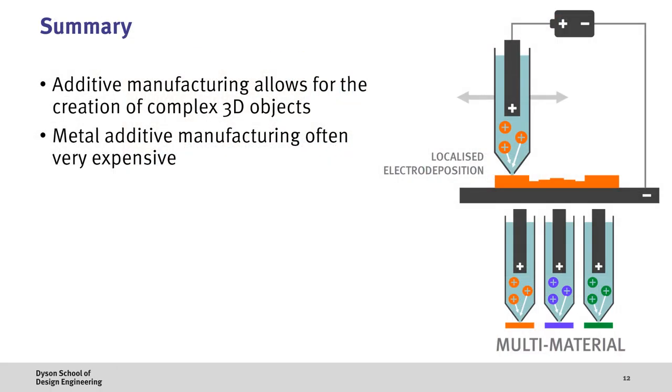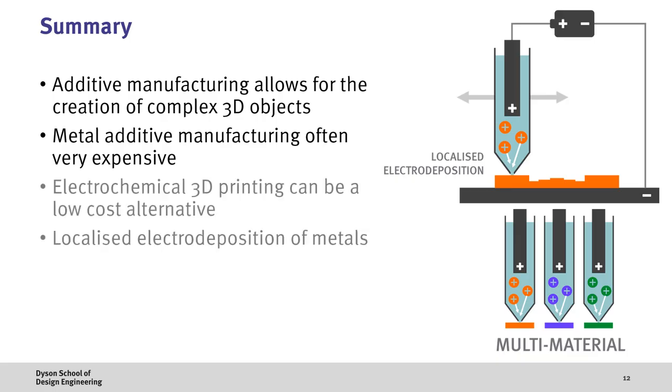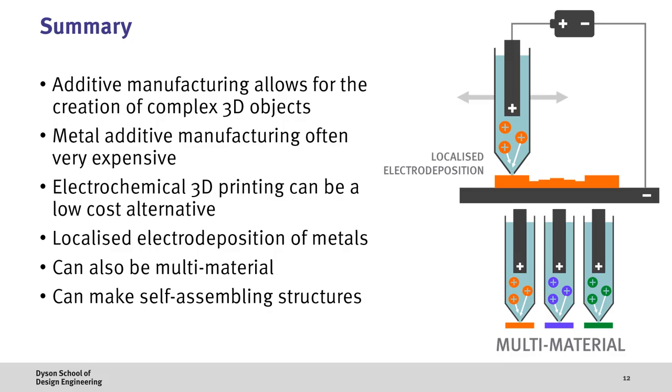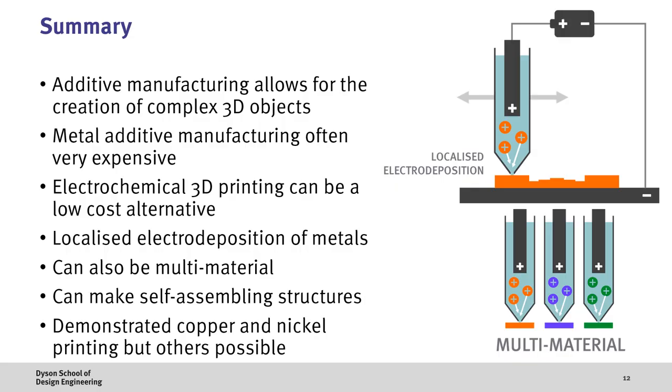So to summarize, additive manufacturing is a technique which allows us to make complex 3D objects with selective laser melting being the main metal additive manufacturing technique. Now whilst this is useful, unfortunately the machines are very expensive. Electrochemical 3D printing therefore has the potential to be a lower cost solution to metal 3D printing and works through the localized deposition of metals. This shift in the way we deposit material means that the systems can more easily be multi-material, which allows for the creation of self-assembling structures which are thermally responsive. This was demonstrated with the multi-metal copper-nickel system, but other metals are also possible.